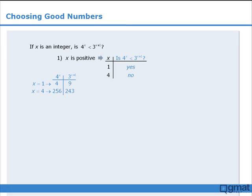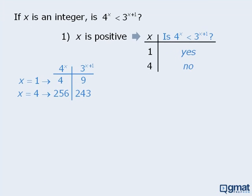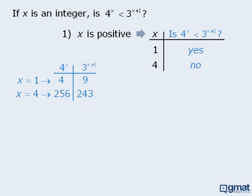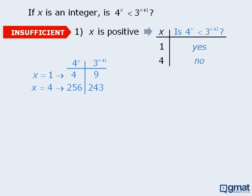In the last lesson, we examined the table method, which can be used to organize results when testing the sufficiency of a statement. During that lesson, we solved the following question. We saw that when x equals 1, the answer to the target question is yes, and when x equals 4, the answer to the target question is no. Since we were unable to definitively answer the target question, we correctly concluded that statement 1 is not sufficient. We saw that the table method can be useful for demonstrating that a statement is not sufficient.